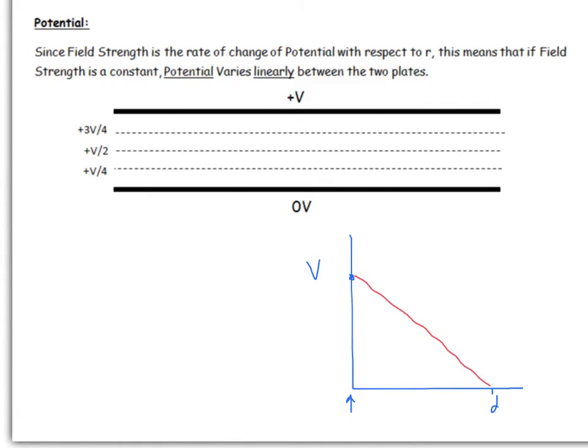You can see some examples here. Halfway you should have half the potential, quarter of the way you should have three quarters, and so on. Let's have a look at this in an example form.